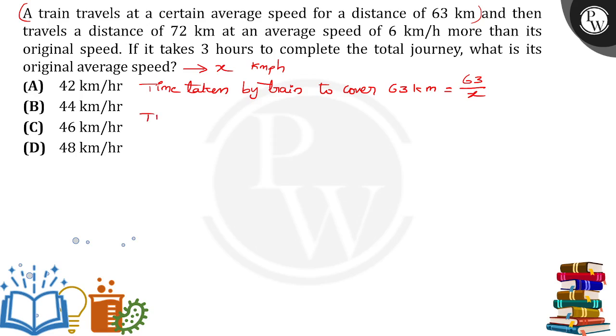The time taken by the same train to cover 72 km at a speed 6 km/h more than its original speed will be 72/(x+6). Total time taken to complete the whole journey equals 3 hours. So the sum of these is equal to 3 hours: 63/x + 72/(x+6) = 3.